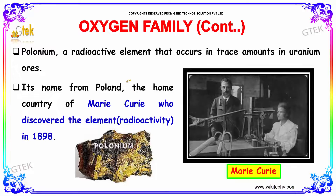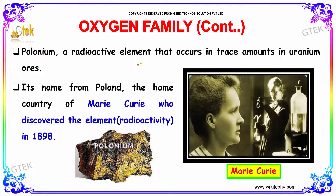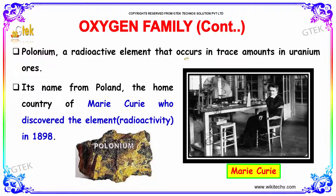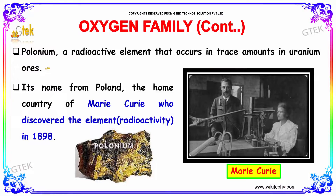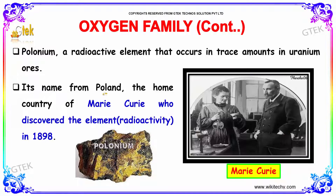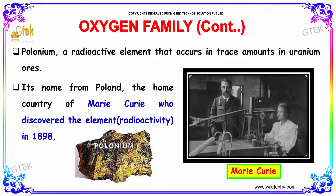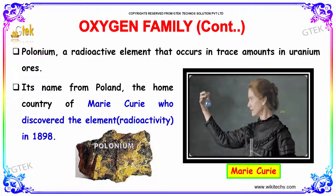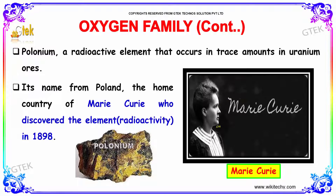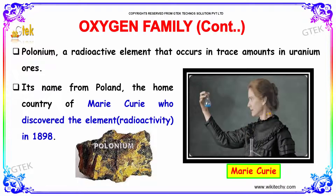Polonium is a radioactive element that occurs in trace amounts in uranium ores. It is named from Poland, the home country of Marie Curie, who discovered the element and radioactivity in 1898.